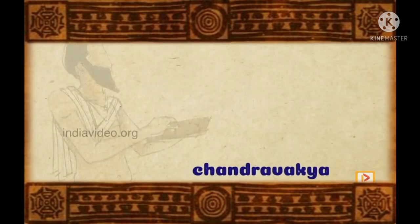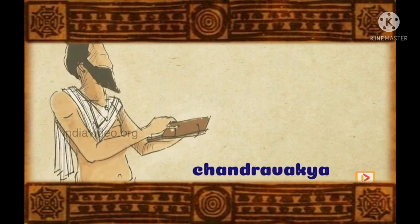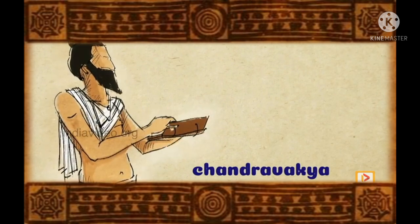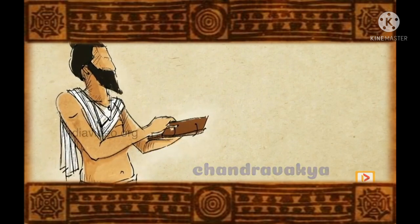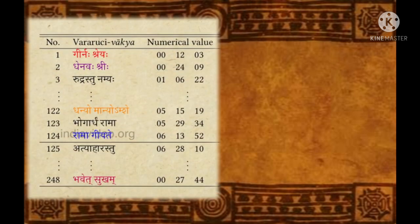Chandravakyas are another set of examples where Katapayadi is used. Written in the 4th century CE by Vararuchi, Chandravakyas are a collection of sentences representing 248 numbers meant for calculating the position of the sun and moon for any time of the year. These numbers were extensively used for computation predicting the position of the moon.